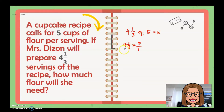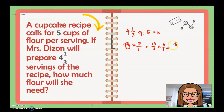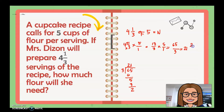Since five is a whole number, write it as five over one. Then change four and one-third to an improper fraction: three times four is twelve, plus one is thirteen, so thirteen over three. Multiply: thirteen over three times five over one gives sixty-five over three. Since it's improper, divide: sixty-five divided by three gives twenty-one with a remainder of two. Therefore Mrs. Leeson will need twenty-one and two-thirds cups of flour.